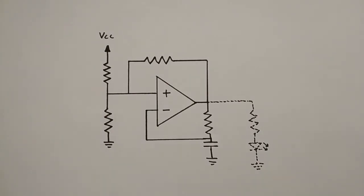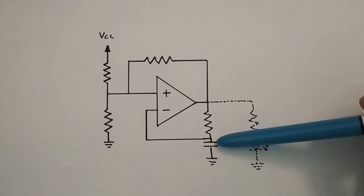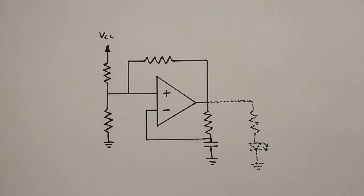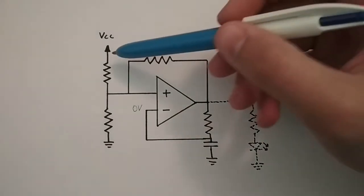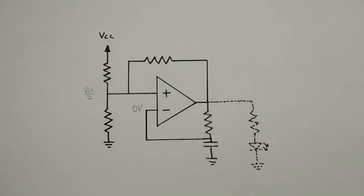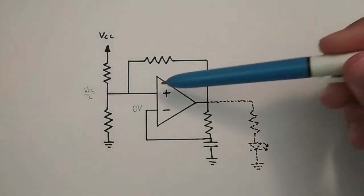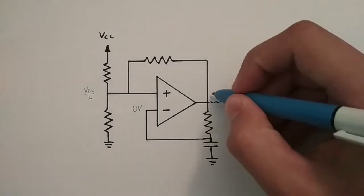To understand how this works, let's start by imagining that the capacitor is completely discharged. This means that the inverting input is at 0V. This voltage divider brings the non-inverting input to ½Vcc. Because this is higher than the inverting input, the output goes high.